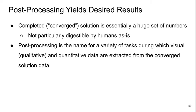Welcome to Part 8 of Lecture 3 of Lift Body Aerodynamics. Once we have our solution, we have to do post-processing to get the things that we actually want out of the solution. Once we have a completed or converged solution, this is basically a huge set of numbers — it's not very digestible by humans. Post-processing is essentially the omnibus name for a variety of tasks during which visual, more qualitative, as well as quantitative data are extracted from the converged solution.